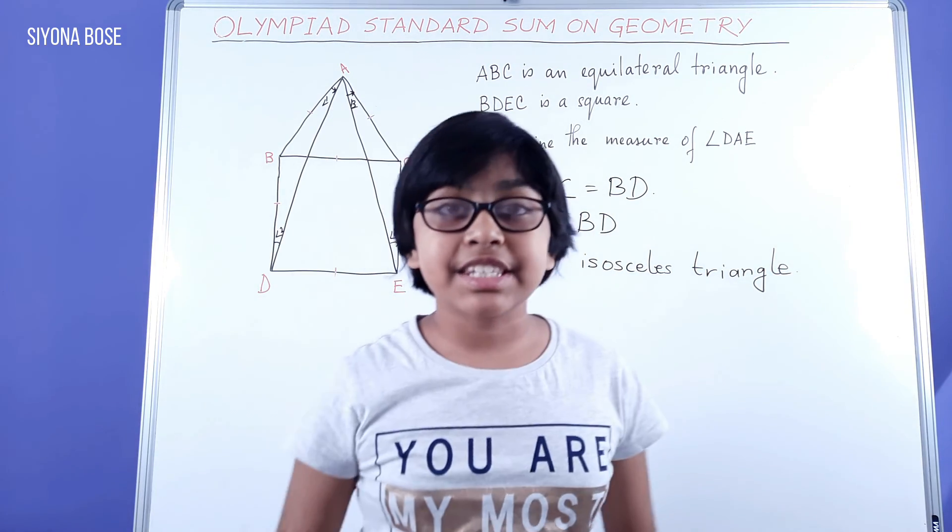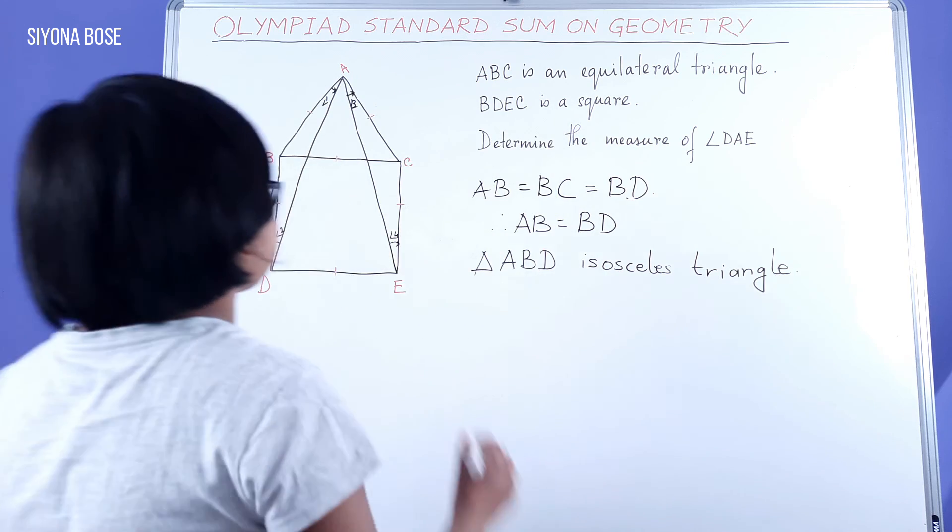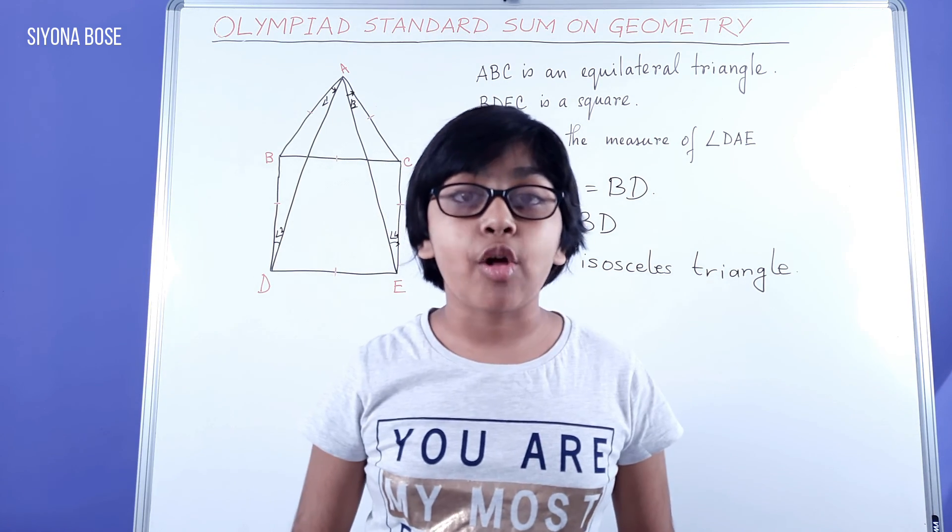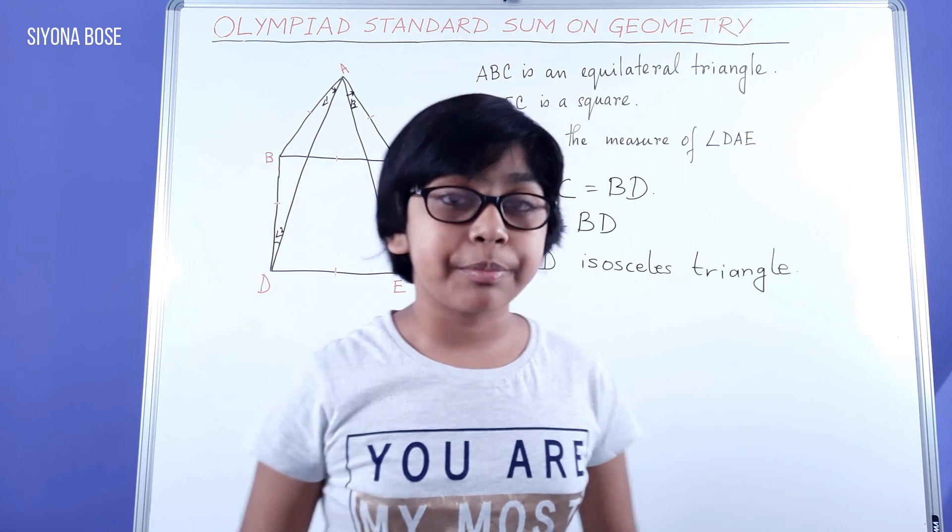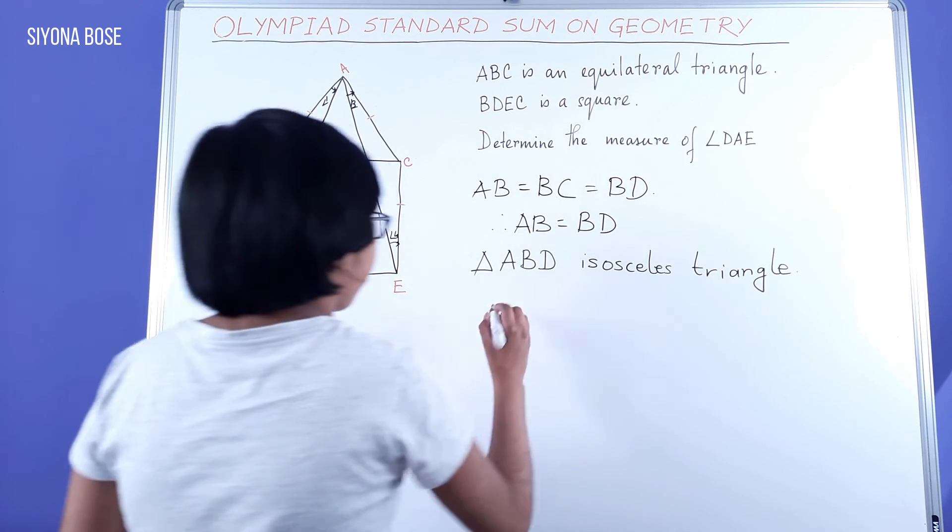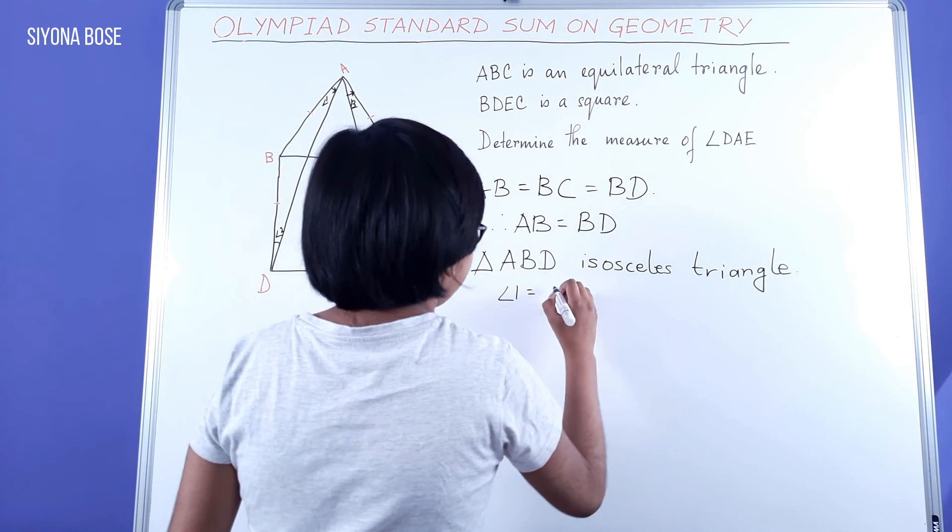Angles opposite to equal sides of an isosceles triangle, in this case triangle ABD, are equal. Therefore, angle 1 equal to angle 2.